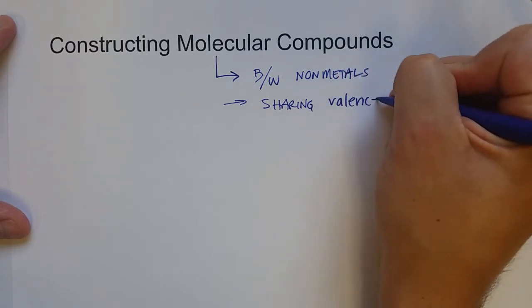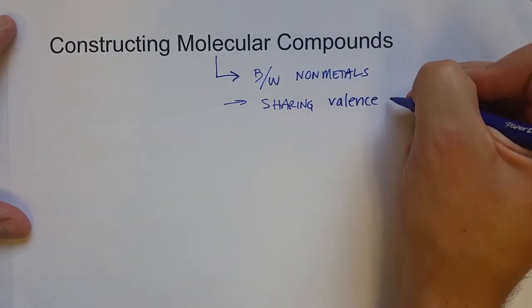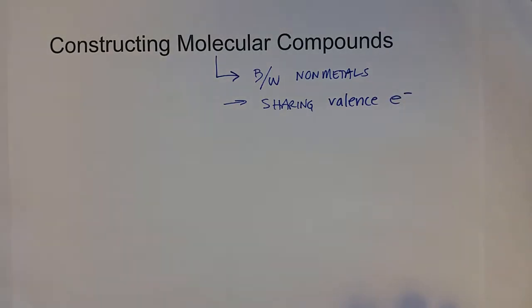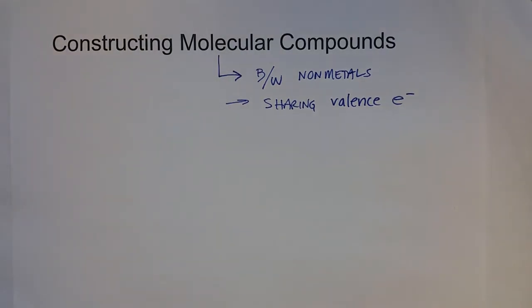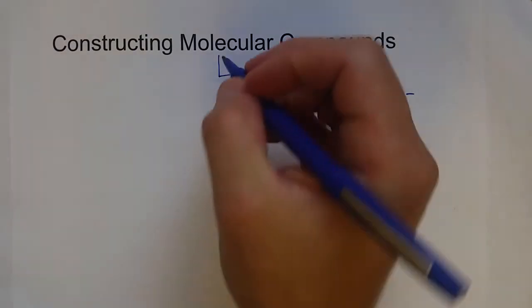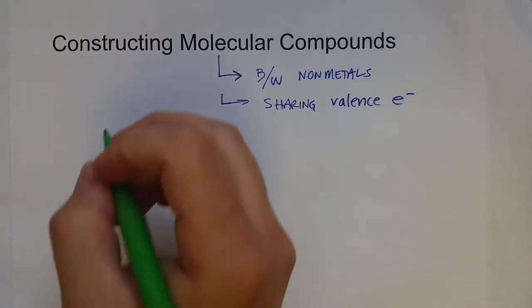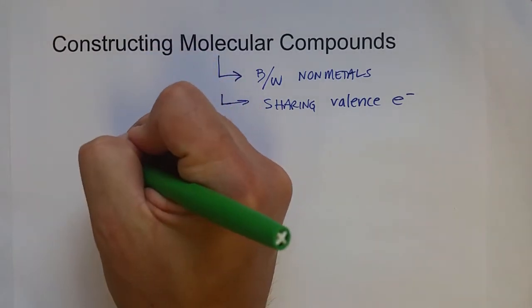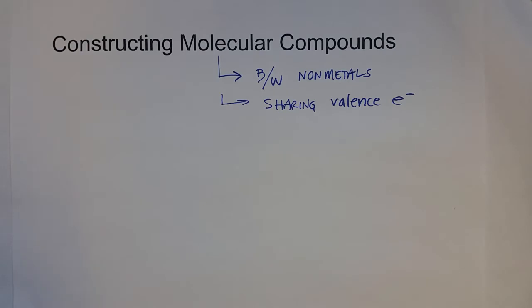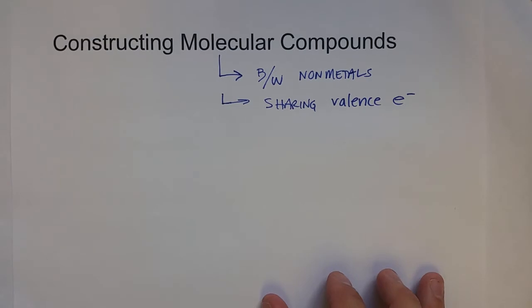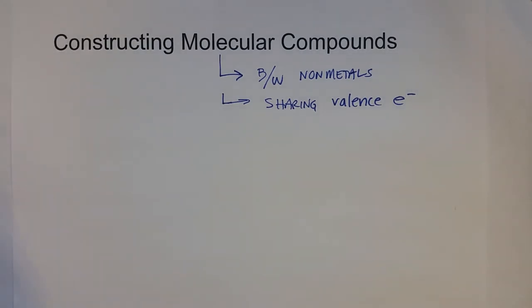Since these atoms don't have a charge, we can't figure out the correct formula by using the must equal neutral charge type of logic. Instead, a couple of ways to figure out the formula for these compounds is drawing the electron dot structures of the different elements or electron dot symbols, and then figuring out how they connect to form the octet rule or satisfy the octet rule.